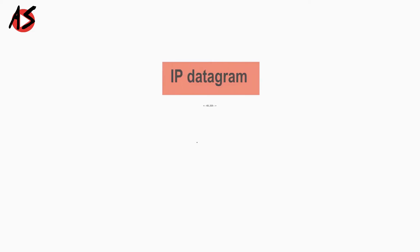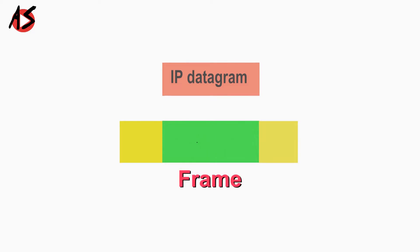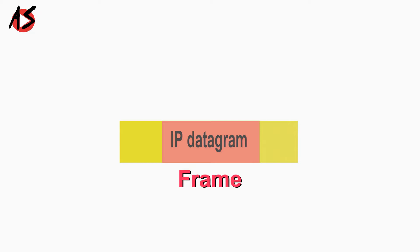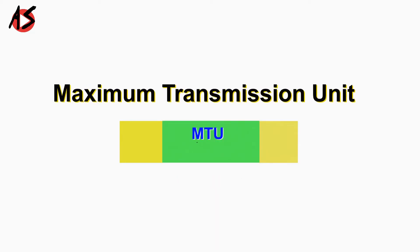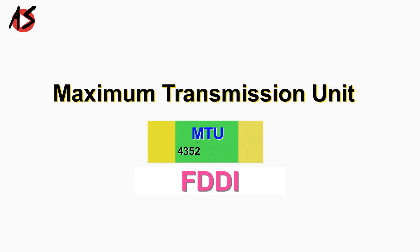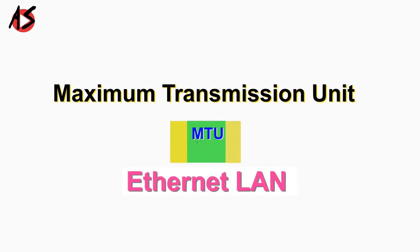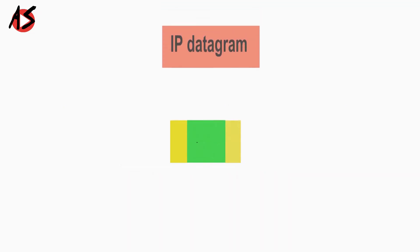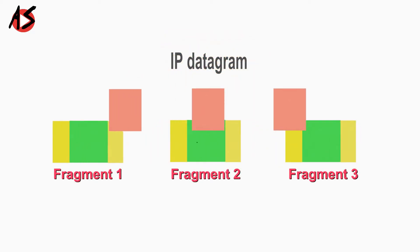The maximum length of the IP datagram is 65535 bytes. But when it comes to the physical network, the datagram will be encapsulated in a frame. The maximum length of data that can be encapsulated in the frame is called Maximum Transmission Unit (MTU). For fiber-based networks like FDDI, the MTU is 4352 bytes. The MTU value for Ethernet LAN is 1500 bytes. This smaller MTU size is due to restrictions imposed by the hardware and software used in the network. So to transfer the IP datagram to such a physical network, we have to divide the datagram into smaller parts or fragments. This process is called Fragmentation.